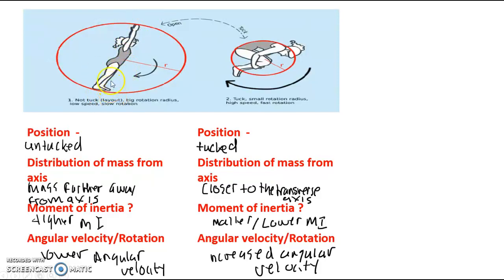And when you have an untucked position, the rotation radius increases. So why does that happen? Well, there's a couple of things that we need to consider with regard to moment of inertia. We need to know that the distribution of mass from the axis is further.